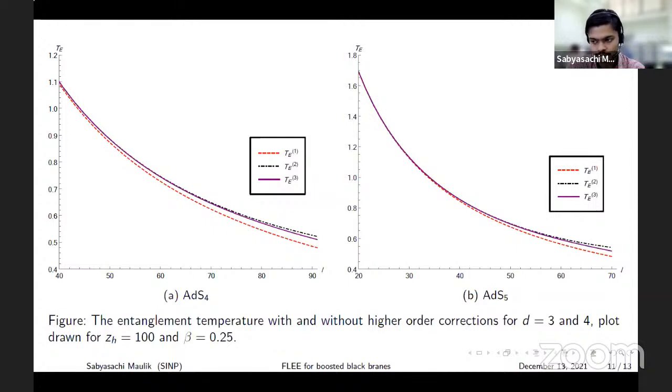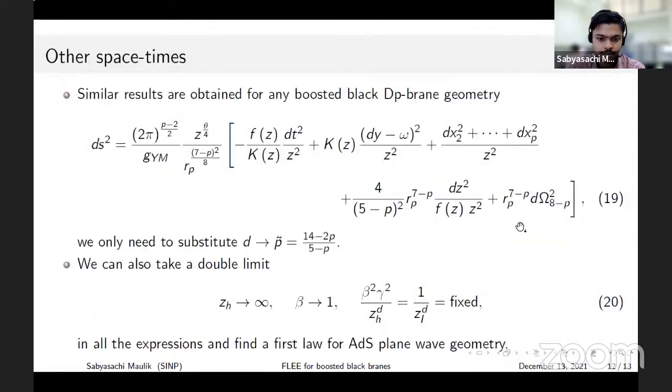We notice the same change in sign at every order that we noticed for the extremal area calculations, and this possibly hints at some kind of convergence of the series. Actually we expect that if this series could be resummed then the entanglement temperature for large subsystem length would approach the temperature of the black hole.